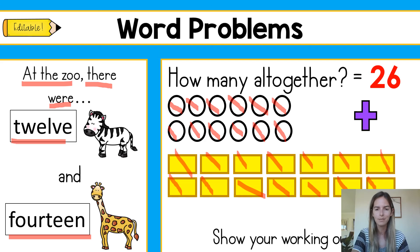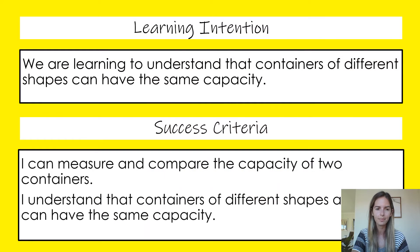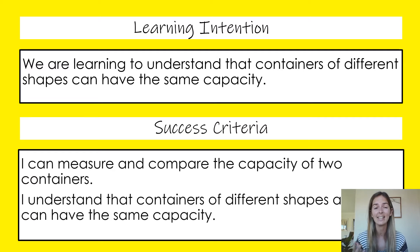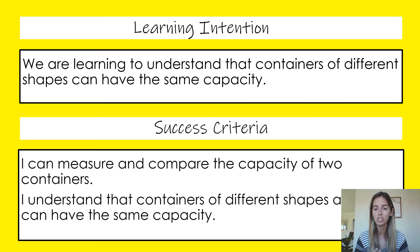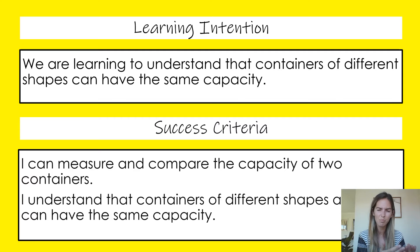All right, well done everyone. Let's get started. Our learning intention today is that we are learning to understand that containers of different shapes can have the same capacity. Our success criteria: I can measure and compare the capacity of two containers, and I understand that containers of different shapes and sizes can have the same capacity. Let's take a look at what we're doing today and how we're going to get there.